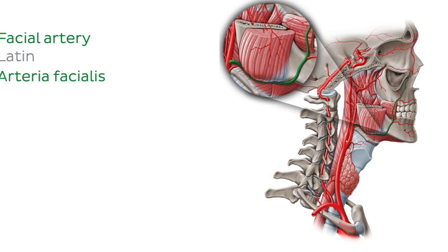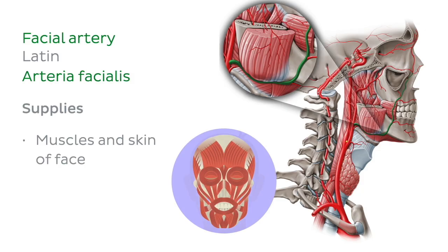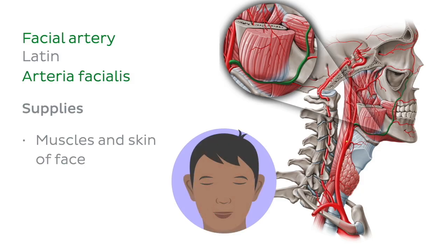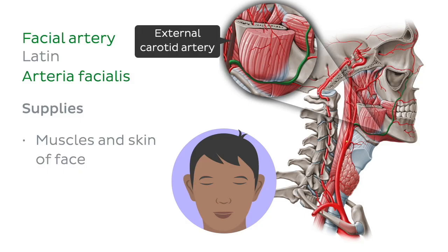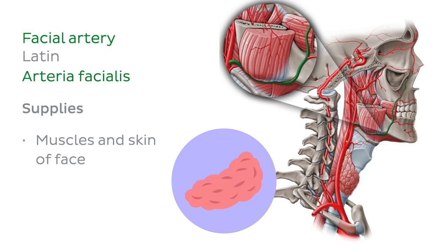The fourth artery is the facial artery which, as its name implies, supplies the muscles and skin of the face. The facial artery arises anteriorly from the external carotid in the carotid triangle. It also gives rise to branches that supply the tonsils, palate, and submandibular glands.